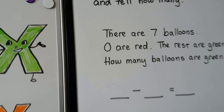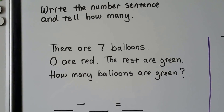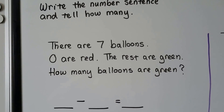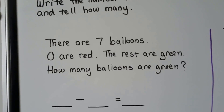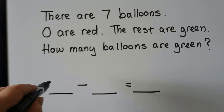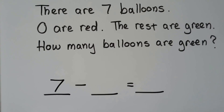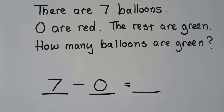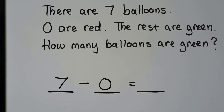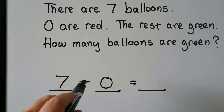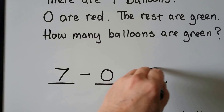We can write the number sentence and tell how many. There are seven balloons. Zero are red and the rest are green. How many balloons are green? Seven take away zero — the number stays the same.